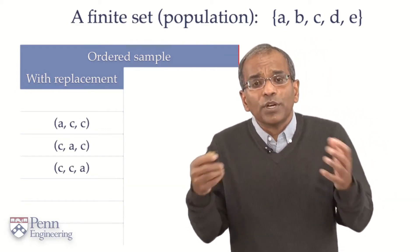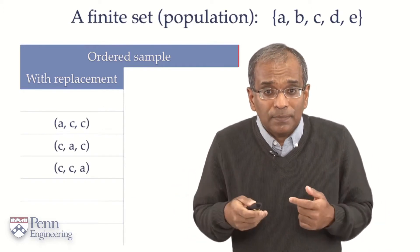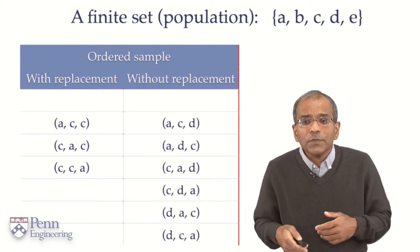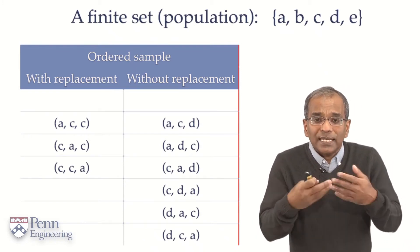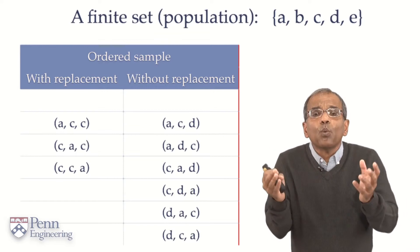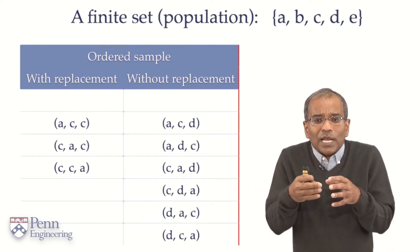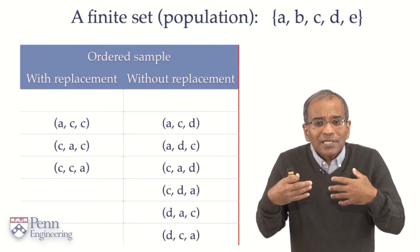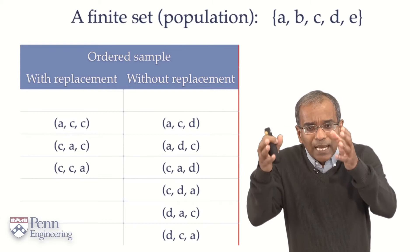What if we choose three objects from this collection, but with the caveat that an object cannot be repeated? This is a province of sampling without replacement. Here's an example. Suppose we collect the objects A, C, and D, in the order A first, C next, and then D. A little thinking will convince you that there are six possible ways we could have selected these three objects. One has to be very careful in making such an ordering.